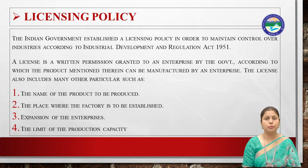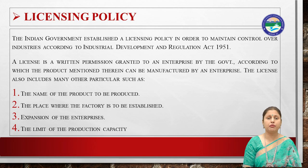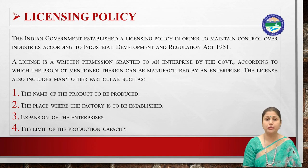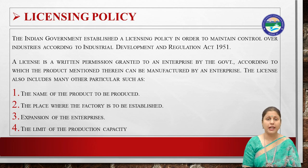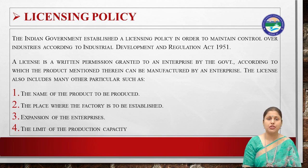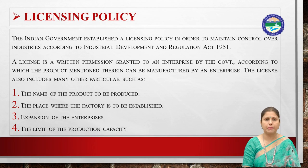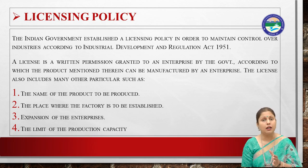The license specifies the name of the product to be produced, the place where the factory is to be established, expansion of the enterprise, and the limit of the production capacity. These are all the things that were mentioned in the license.